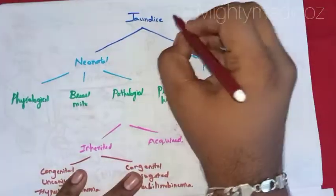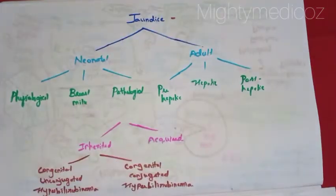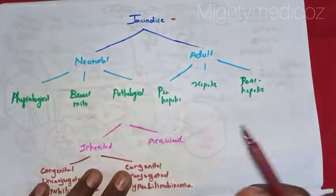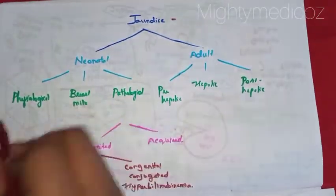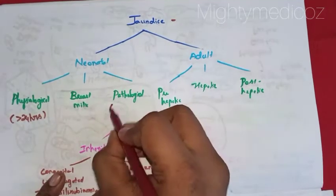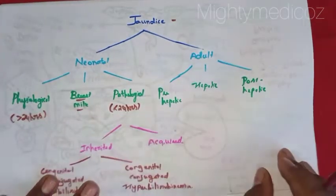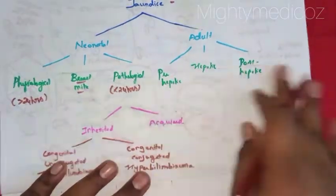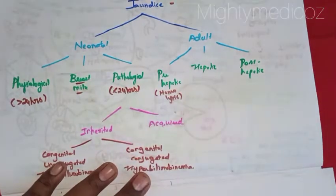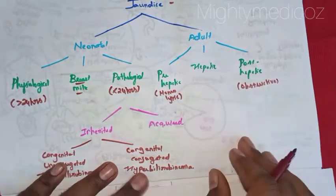We are dealing with jaundice in a series of videos. For convenience, we have classified jaundice into Neonatal and Adult Jaundice. Neonatal Jaundice is further classified into Physiological Jaundice, which occurs after 24 hours of birth, and Pathological Jaundice, which occurs within 24 hours of birth. In Adult Jaundice, we have Pre-Hepatic, also called Hemolytic Jaundice, Hepatic Jaundice, and Post-Hepatic, also called Obstructive Jaundice.